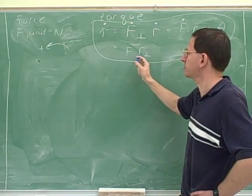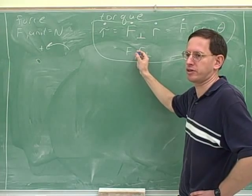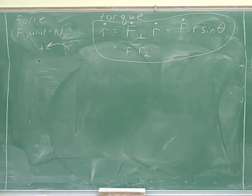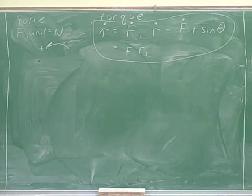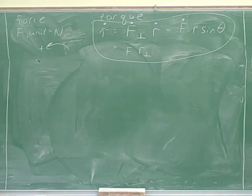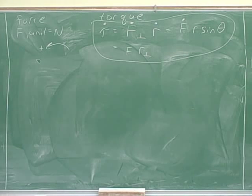So we actually ended up with three different formulas for torque. Your instructor used the R perpendicular formula in the lecture notes, which is why the handout has two columns — one for the F perpendicular equation and one for the R perpendicular equation. As a rule of thumb: if the problem specifies the angle the force is making, the F perpendicular method is probably better. If you're not given that angle, the R perpendicular method is probably better.